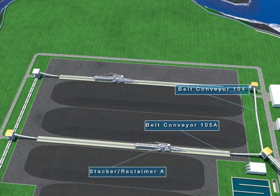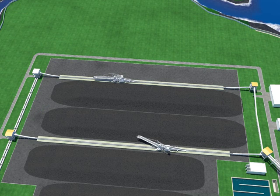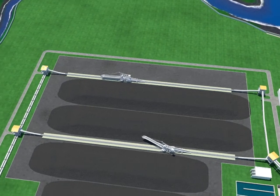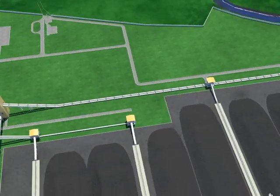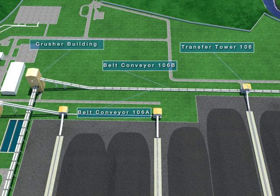The coal can be directly loaded through Conveyor 105A or piled at the coal storage yard by Stacker Reclaimer A. When loading, it can be sent to the Crusher Building by Conveyor 106A or 106B through the Diverted Gate after separating pieces of iron at Magnetic Separator 105A through Transfer Tower 106.